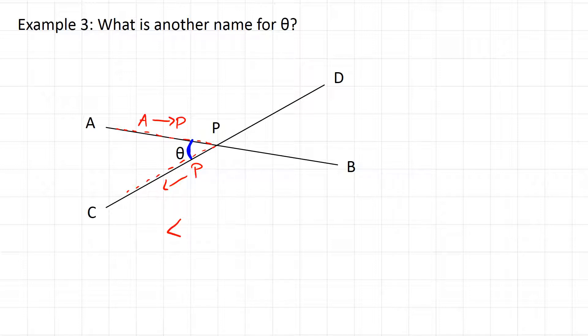So we could say that this is angle APC. Or, like you saw before, we could do the reverse and say it's from C to P, and then to A. And either of those would be acceptable answers.